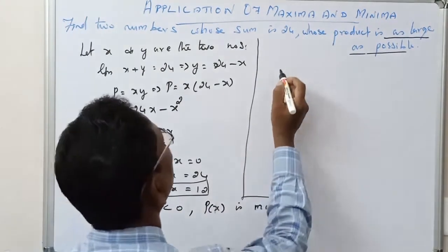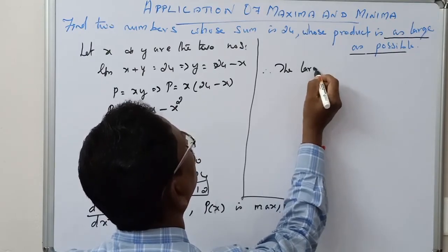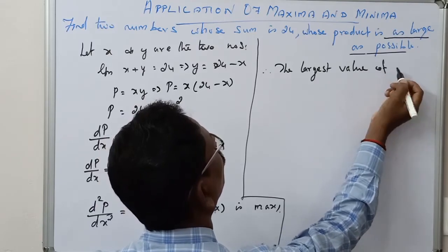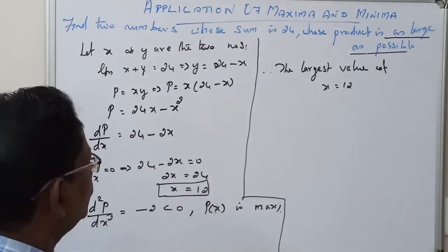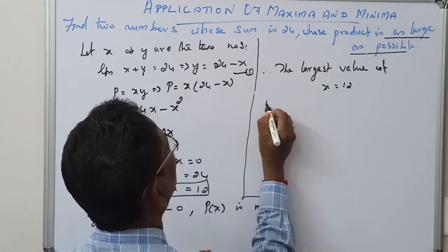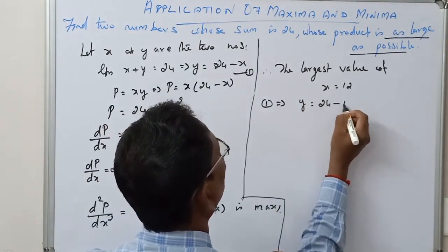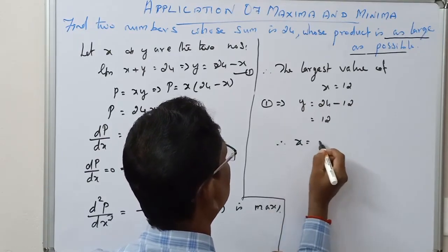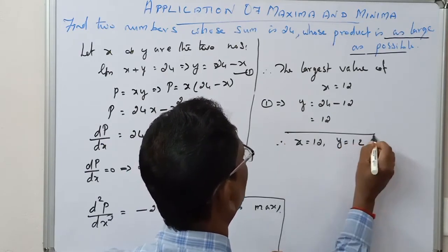Therefore the largest value of x is equal to 12. From the first equation, y equals 24 minus 12, which equals 12. Therefore x equals 12 and y equals 12 is the answer.